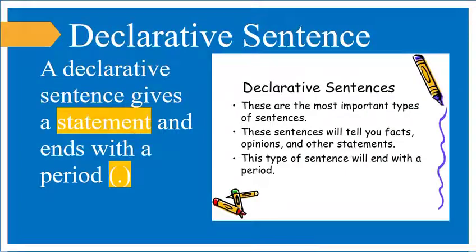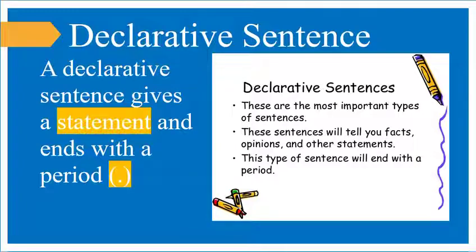What is a declarative sentence? A declarative sentence gives a statement and ends with a period. Let's take examples of them. These are the most important types of sentences. These sentences will tell you facts, opinions, and other statements. This type of sentence will end with a period.